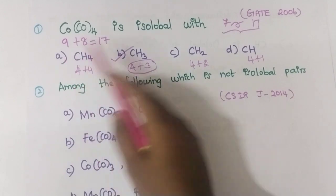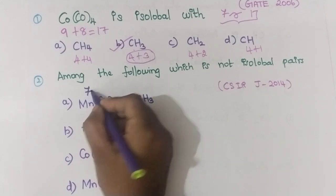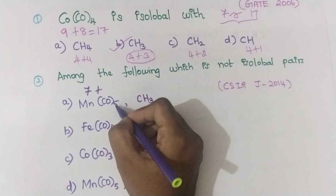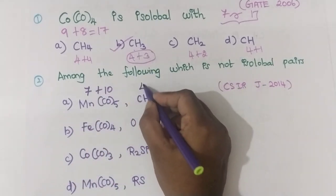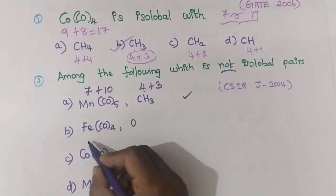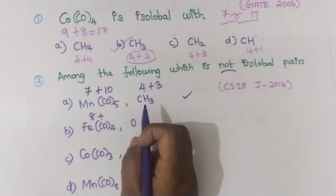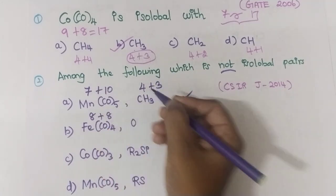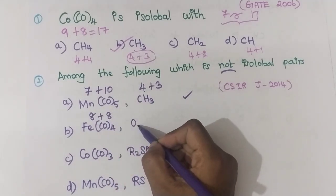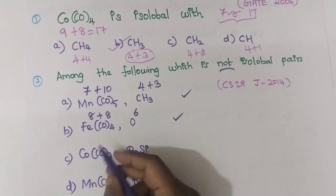Next question: among the following, which is NOT isolobal? For Mn(CO)₅: manganese has 7 valence electrons and five carbonyls donate 10 electrons, giving 17. CH₃ has 7 electrons. These are isolobal. For Fe(CO)₄: iron has 8 valence electrons and four carbonyls donate 8 electrons, giving 16 total. Oxygen has 6 valence electrons (2s²2p⁴). So Fe(CO)₄ (16 electrons) and O (6 electrons) are also isolobal.